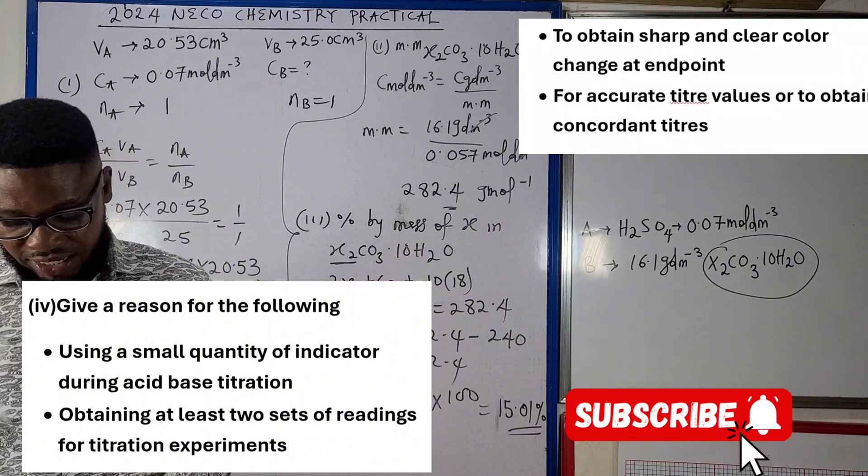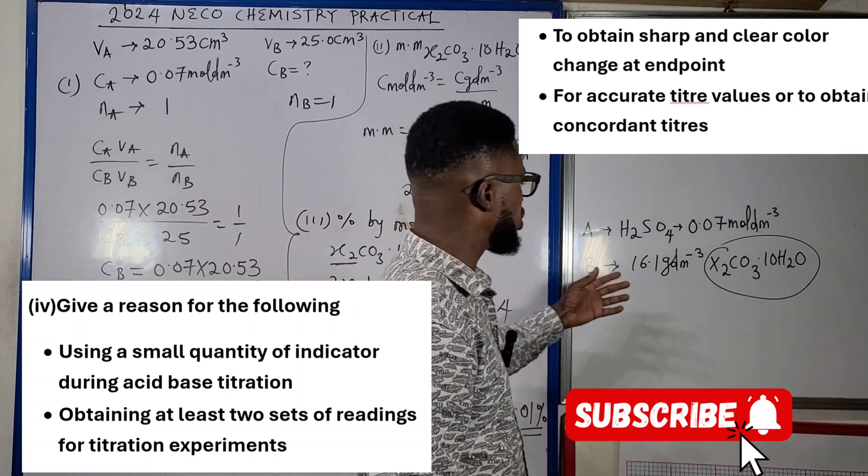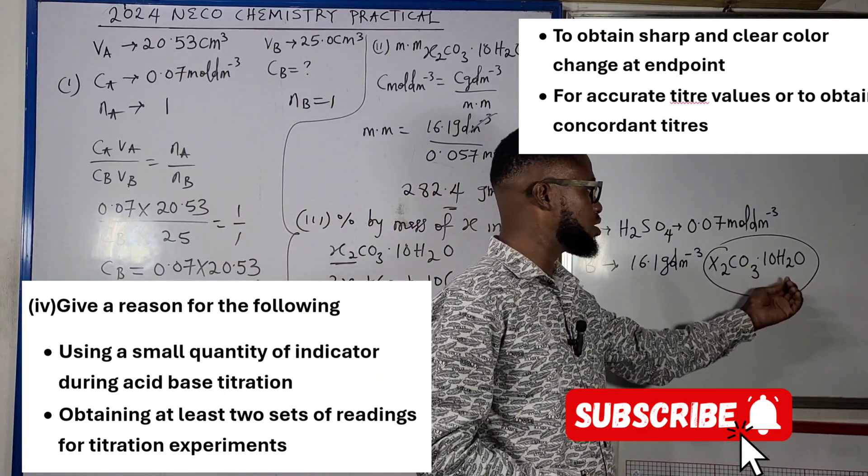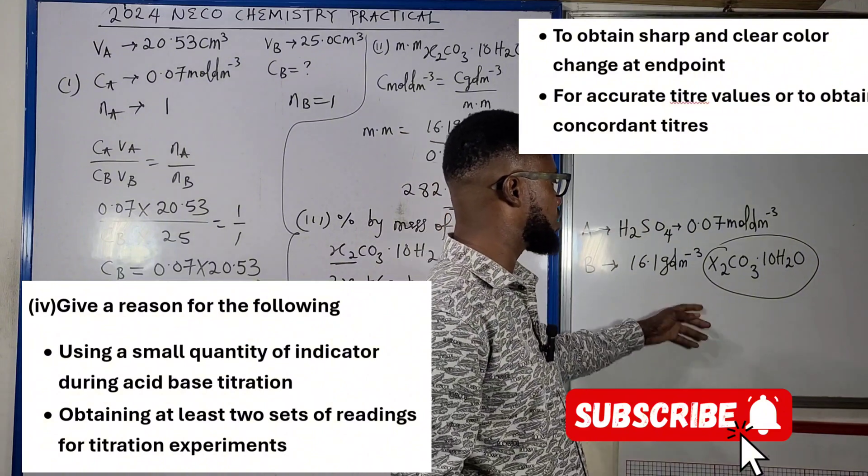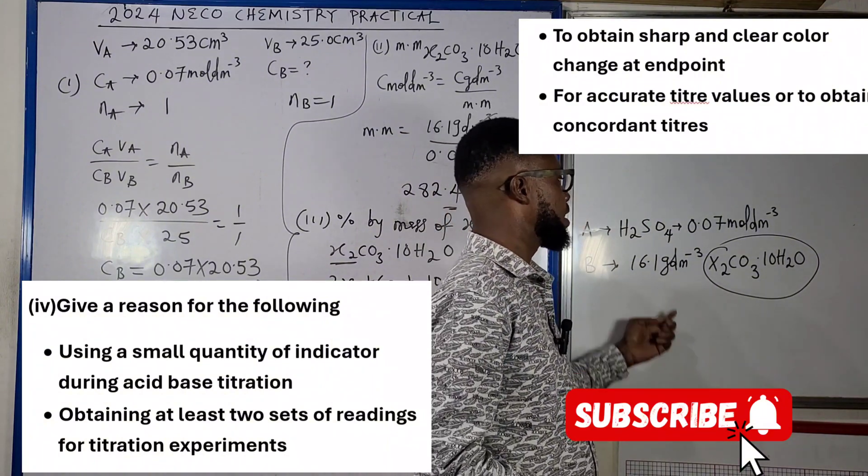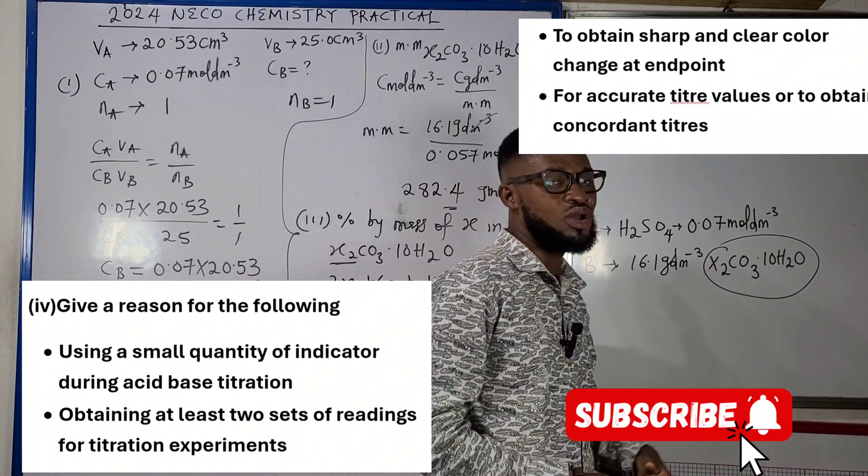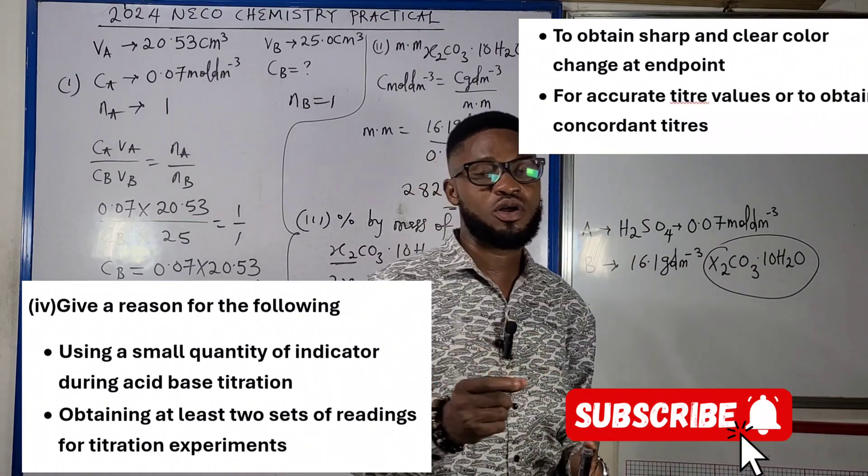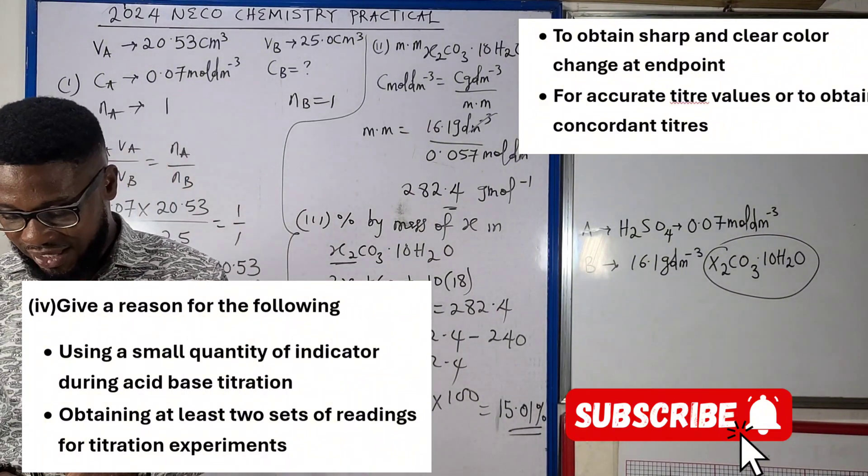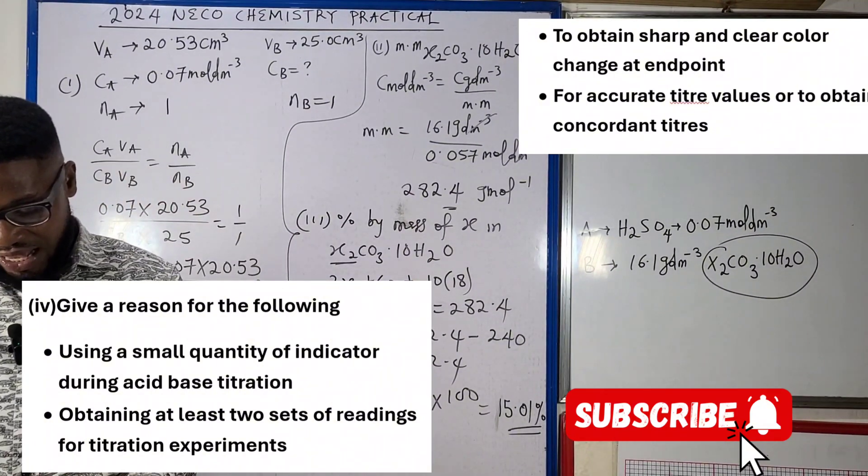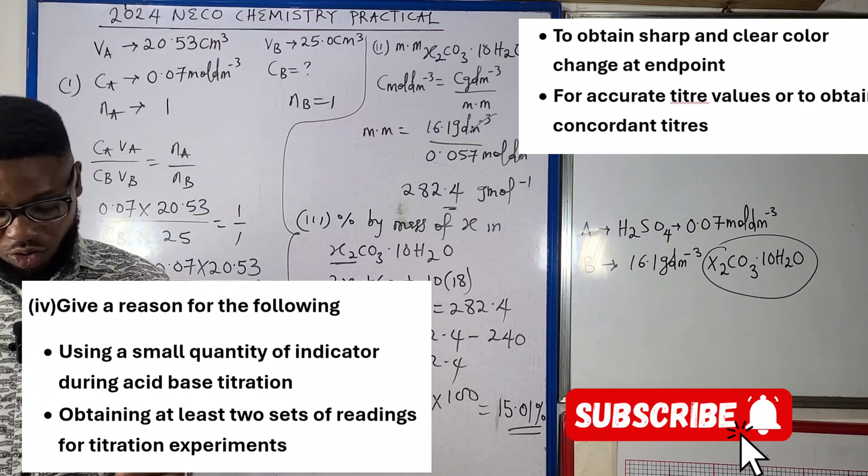Why is it that the quantity of indicator is usually small? Very easy. The answer to that is so that we obtain a sharp and clear color change at the end point in this titration. Once we prepare the X2CO3, labeled B, and we add our methyl orange indicator, the color will be yellow. Now at the end point, by the time we begin to run in the acid, the color will change from yellow to pink. So the reason why we are using very small amount of indicator is so that we obtain consistent titre value or consistent endpoint, to obtain a sharp or precise and a clear color change at the end point.